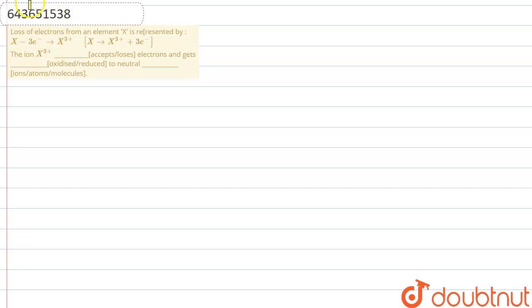Hello everyone, this is our question. Let me explain it to you. Loss of electrons from an element X is represented by this. What change is given to us here? X is losing 3 electrons and forming X3+.